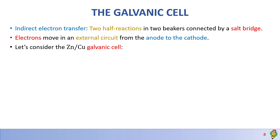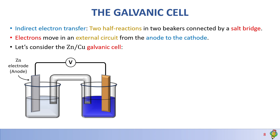We will look at the zinc-copper galvanic cell. The zinc electrode is called the anode because this is where oxidation happens. The copper electrode is called the cathode because this is where reduction happens. We have zinc 2+ and copper 2+ in their respective solutions. In a galvanic cell, the anode is negative and the cathode is positive.